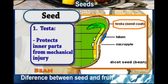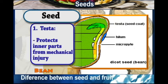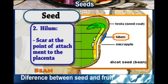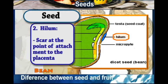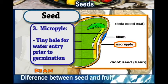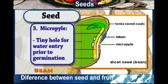To summarize: we have the testa, which protects the inner parts from mechanical injury; the hilum, which is a scar left at the point of attachment to the placenta; and the micropyle, which are tiny holes that help in the entry of water prior to germination.